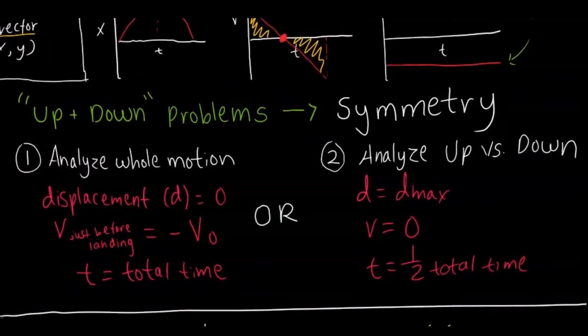The other thing regarding free fall is up and down problems. We already talked about that symmetry that you're going to see. There are two strategies you want to use when analyzing these problems. You can either analyze the whole motion, which the displacement would be zero because it came back down, the velocity just before landing is the negative of that initial velocity, and then the time is just the total time it took for the entire motion.